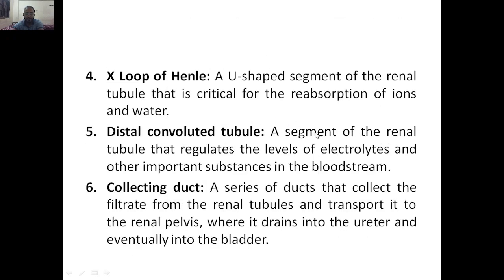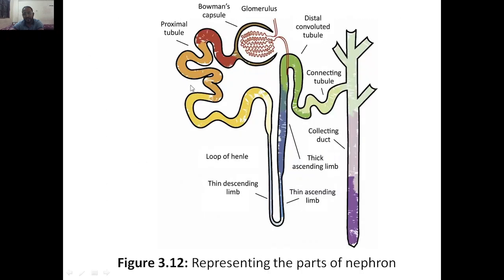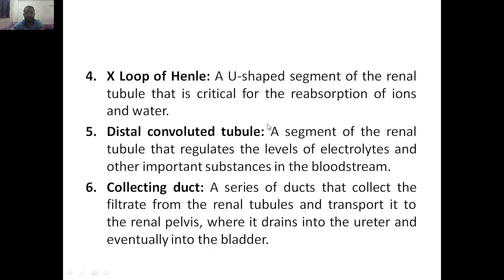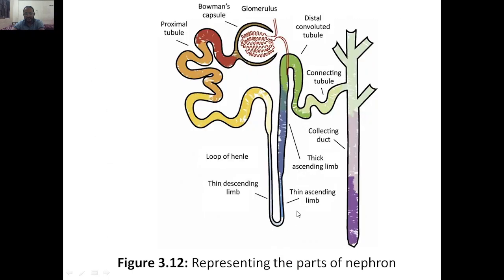The distal convoluted tubule regulates the level of electrolytes and other substances in the bloodstream. So the proximal tubule reabsorbs electrolytes and glucose, while the distal tubule regulates them. Next, the collecting duct is a series of ducts that collect filtrate from the renal tubules and transport it to the renal pelvis, where it drains into the ureter and eventually into the bladder.